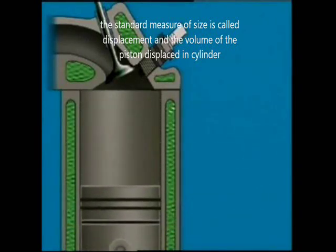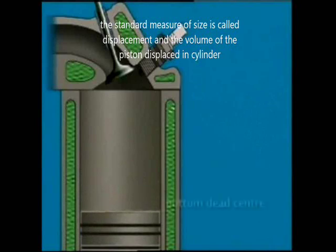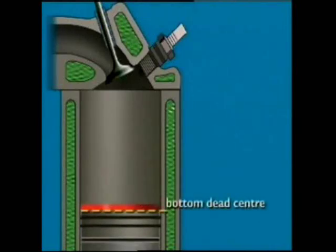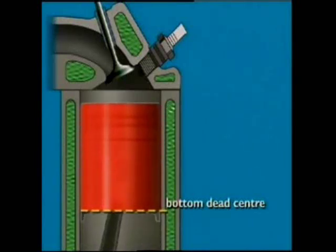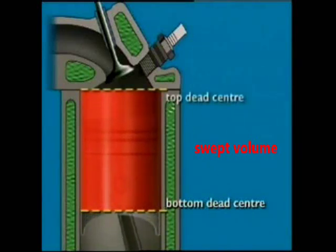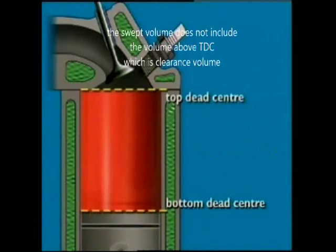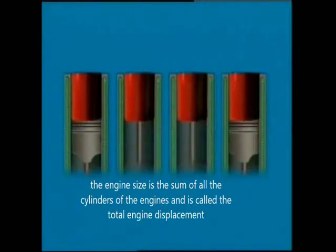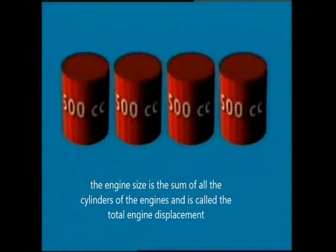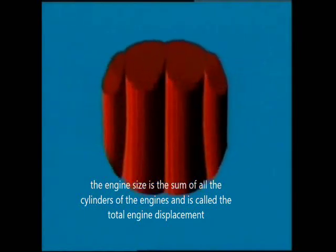Displacement is the volume displaced by the piston in the cylinder, from the cylinder's lower point to the higher point. The lower point is called the Bottom Dead Center (BDC) and the higher point is called the Top Dead Center (TDC). This is also called the swept volume. The swept volume does not include the volume above TDC, which is called the clearance volume. The engine size is the sum of all cylinder displacements and is called the total engine displacement.